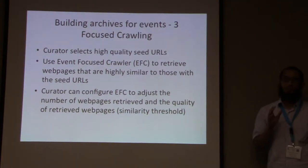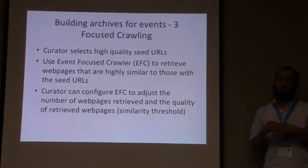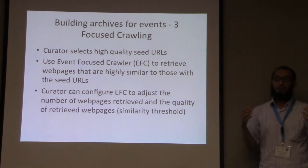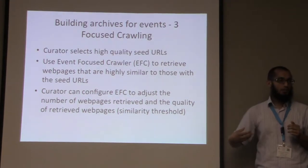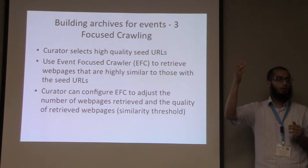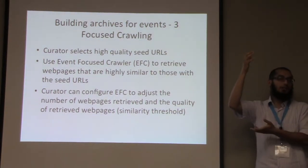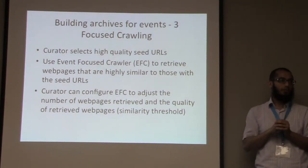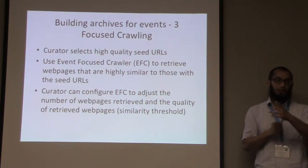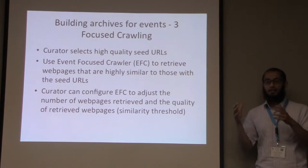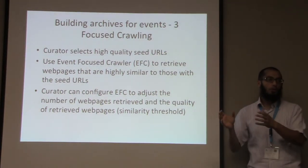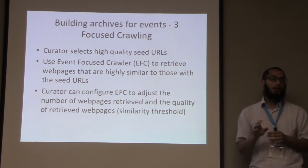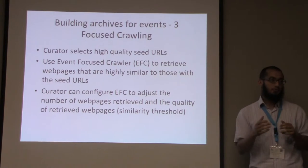Focused crawlers have existed since the 1970s as topical crawlers. Basically, it starts from a seed or selected set of URLs and uses a target representation of the topic you want — a set of keywords or example web pages about the topic. The crawler visits these web pages, extracts the URLs from them, and puts them in a queue, determining the order to prioritize where it visits next. One disadvantage is topical drift — you don't know where the crawler will go after crawling for a long time, and it will get a lot of noise depending on the keywords you use.